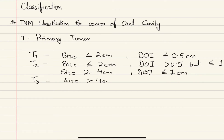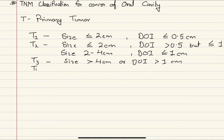T3 is when the size of the tumor is more than 4 cm, or when the depth of invasion is more than 1 cm — in either of these conditions the tumor is graded as T3. T4 is when the disease is moderately advanced or highly advanced.